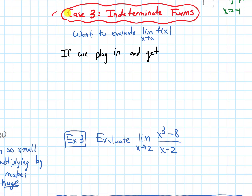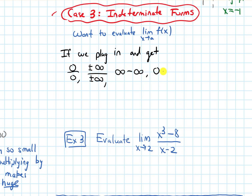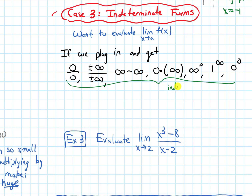In this video, we will talk about Case 3 of evaluating limits algebraically, which is when we get indeterminate forms. The scenario is we want to evaluate the limit as x approaches a of a function f(x). We always start by trying to plug in x equals a, and if we do that, we get either 0/0, or ±∞/±∞, or ∞ minus ∞, or 0 times ∞, or ∞ to the 0, or 1 to the ∞, or 0 to the 0. These are all called indeterminate forms.